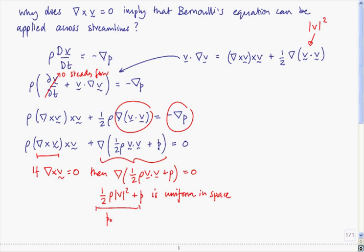So what we have is that the stagnation pressure p0 is the same along every single streamline. And that is why, when curl of v equals zero, you can apply Bernoulli across streamlines as well as along streamlines, because it's the same on every single streamline.